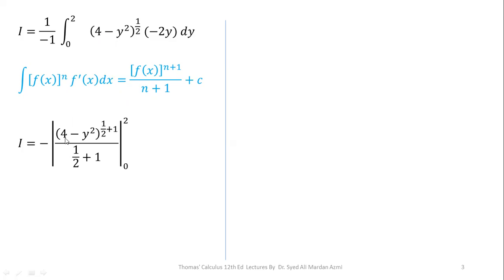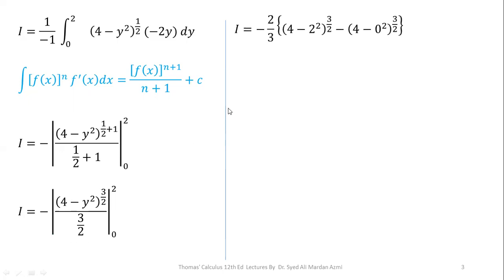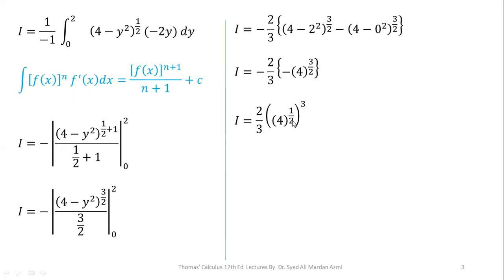Applying this formula, we have the integral of (4 minus y squared) to the power 1/2, evaluated with the limits 0 to 2. The result is (4 minus y squared)^(3/2) divided by (3/2), which becomes negative 2/3 times (4 minus y squared)^(3/2). Applying the limits, upper minus lower: we get negative 2/3 times 4^(3/2). Splitting the power: 4^(1/2) is 2, and 2 cubed is 8. So 8 multiplied by 2 gives 16, and 16 over 3 is our final answer.